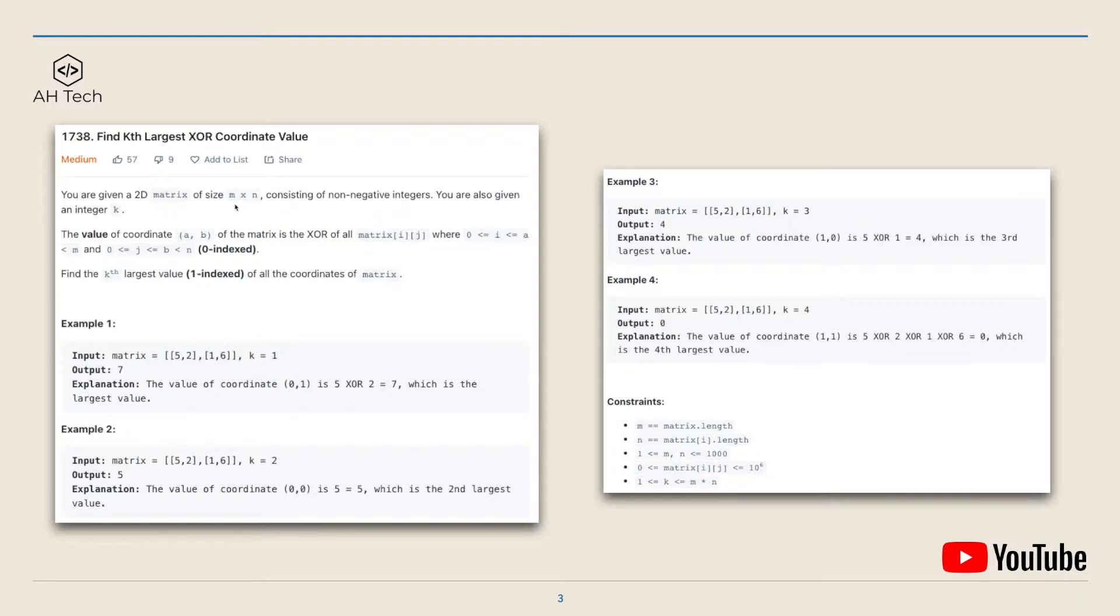Now let's look at the question. We are given a 2D matrix of size m times n consisting of non-negative integers, and we are also given an integer k. Here we define the value of coordinate (a,b) of the matrix as the XOR of all matrix[i][j] where i is bigger than 0 and smaller than a, and j is larger than 0 and smaller than b.